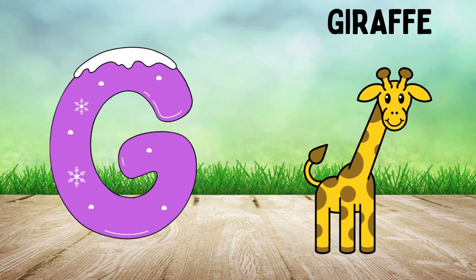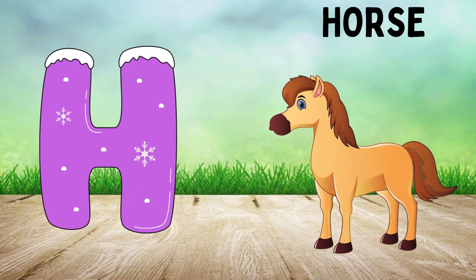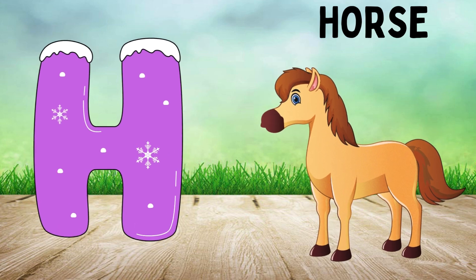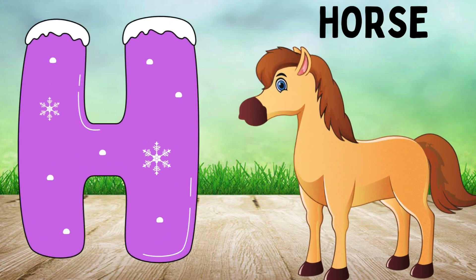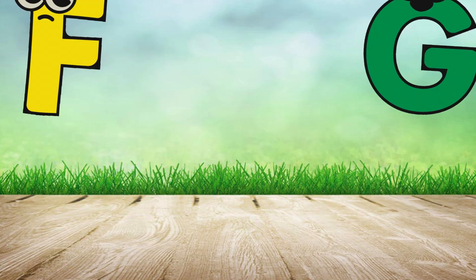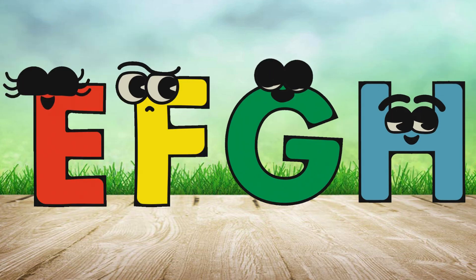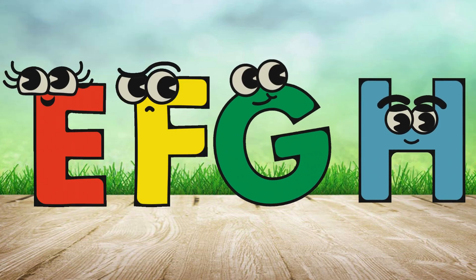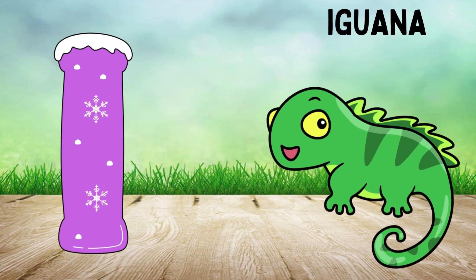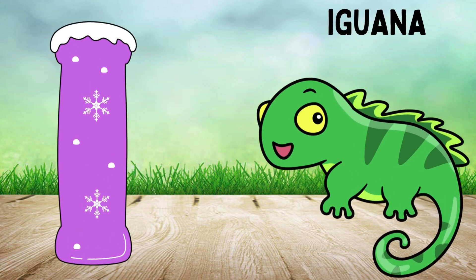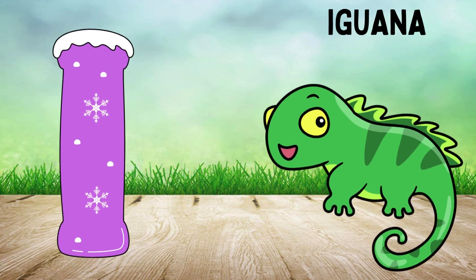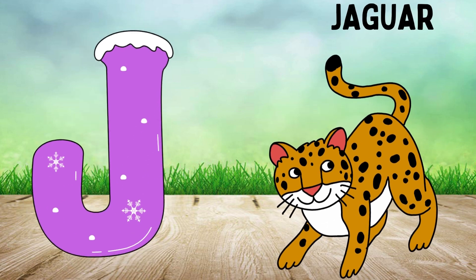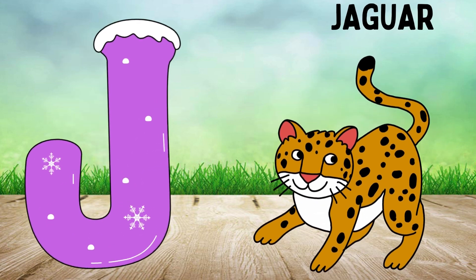G is for Giraffe. G, G. Giraffe. H is for Horse. H, H. Horse. I is for Iguana. I, I, I. Iguana.